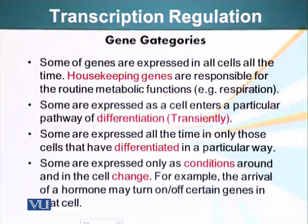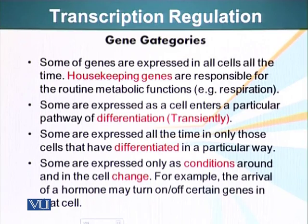First of all, let's categorize genes — just rough categories. The first category would be housekeeping genes. These genes are expressed in all cells at all times and they are generally responsible for routine metabolic function. For example, respiratory enzymes which are present in mitochondria are expressed in all cells. The cytoskeletal proteins are always present in all cells.